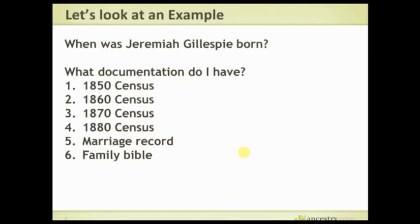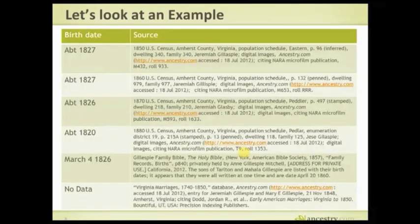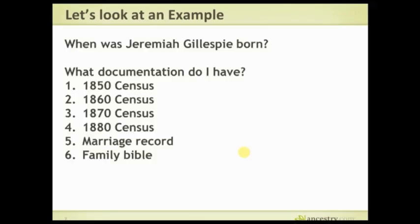Let's look at an example of how to write some citations. This is my great-great-grandfather, Jeremiah Gillespie. When was he born? I have the 1850 census through the 1880 census, a marriage record, and my family Bible. You might look at that and say, 'You've got the family Bible — you're done.' Not so fast. All these records are sources, and the information I'll use as evidence to answer when Jeremiah was born comes from all of them.